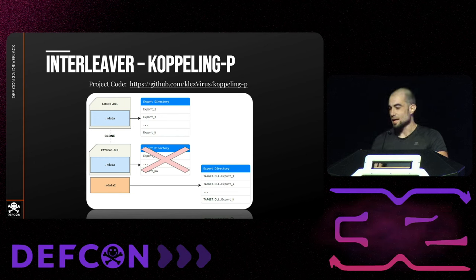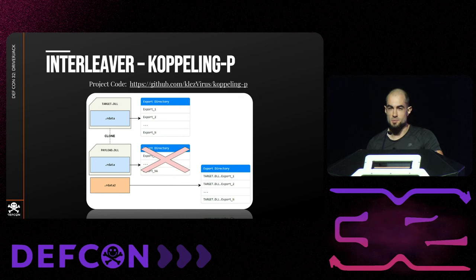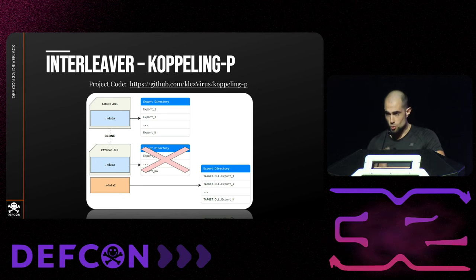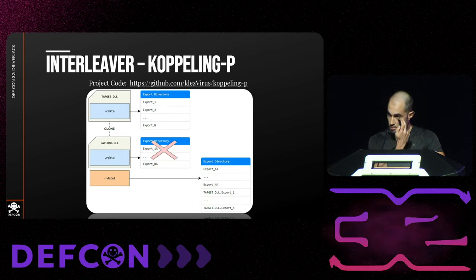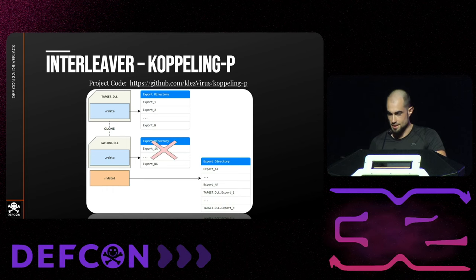CouplinP is a framework that takes a target DLL, clones the exports from the export address table, and you can include it in a DLL you developed — typically used for DLL side-loading using DllMain as the entry point. The problem is that this process is destructive: if you have existing exports in your payload DLL they will be erased. CouplinP solves this by preserving existing export data and just adding the forwards afterwards.